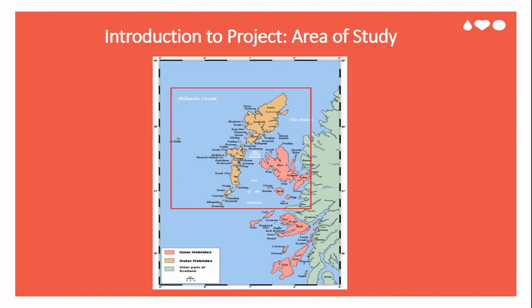For a quick introduction and orientation to my area of study, this is Skye in the Western Isles, located on the northwest coast of Scotland. The major island here is Skye, and then there is Lewis, Harris, and North and South Uist. This chain of islands is called the Outer Hebrides or the Western Isles — I may use them interchangeably.